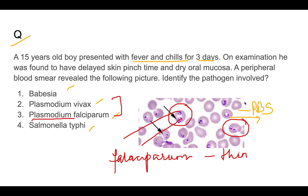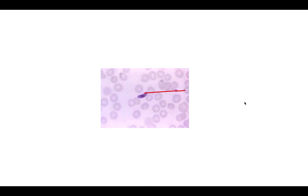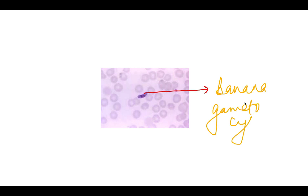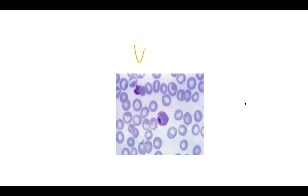In falciparum, thin rings and multiple ring forms per RBC are characteristic. Another hallmark feature is the banana-shaped gametocyte — if you see this in a picture, it is falciparum only.